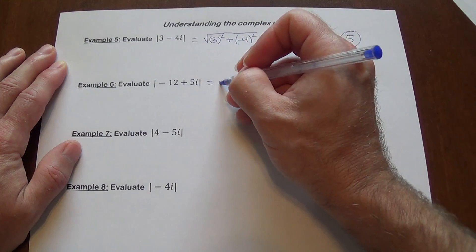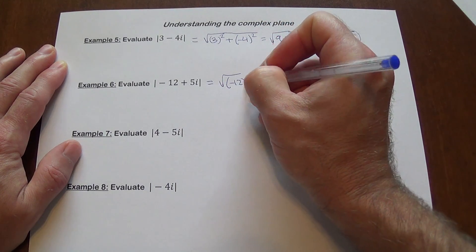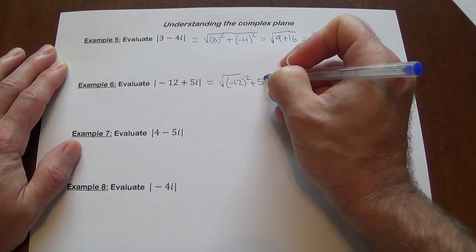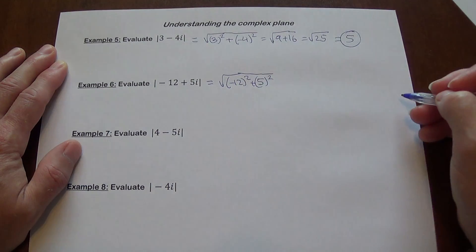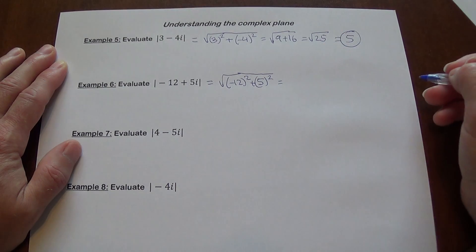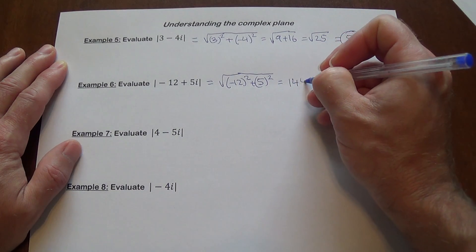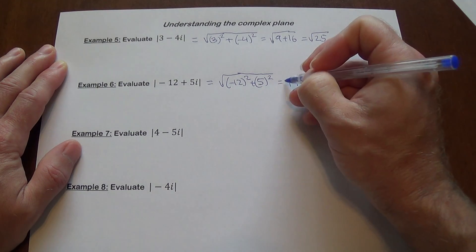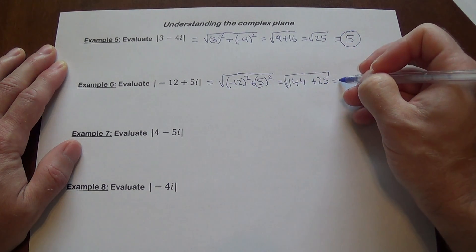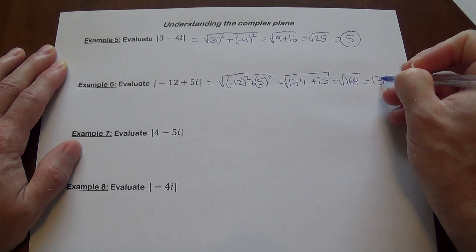Here, square root of squaring negative 12 plus squaring 5. Same idea, I would recommend using parenthesis here so you avoid any complications. So it's 144 plus 25, of course the square root, which is the square root of 169, which is 13.